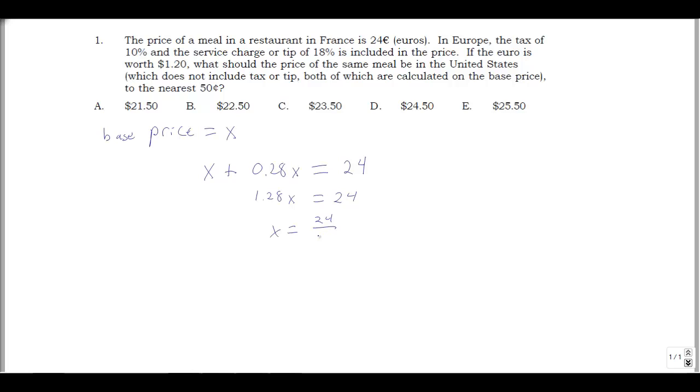So x is 24 over 1.28 euros. I could calculate that right now, but I might get a decimal approximation. So I'm just going to leave that as 24 over 1.28 for the time being.